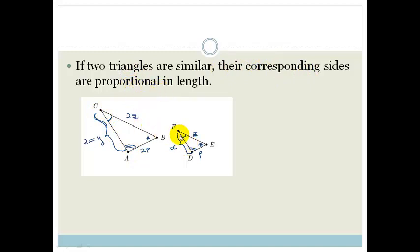In other words, whatever the ratio is of FD to CA, that would be the same as the ratio of CB to FE.